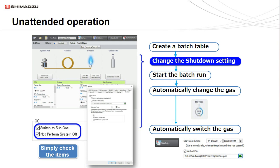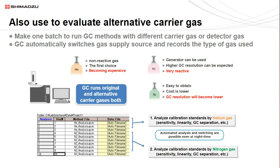The gas selector can also be used to reduce helium usage by switching to an alternative carrier gas altogether. Usually you have to perform a hardware reconfiguration each time you want to switch back and forth between two carrier gases, but the gas selector eliminates the need for this changeover. Because this process is automated, we can actually make one batch table to run methods with different carrier gases and compare the results directly for much faster method development. Lab Solutions will also record the type of gas used for each sample for data integrity purposes.